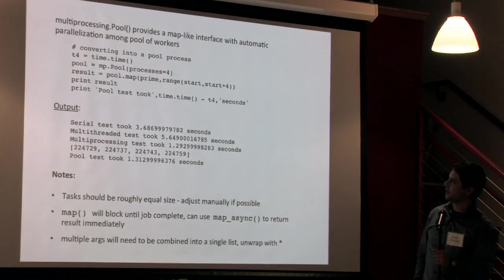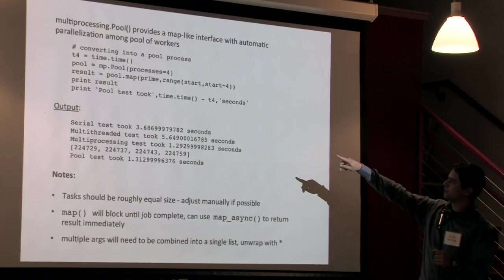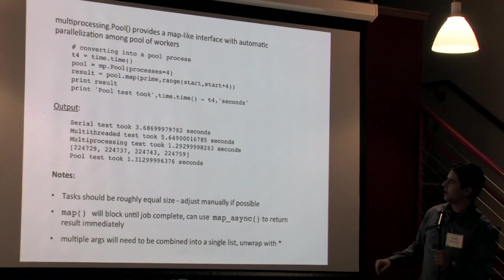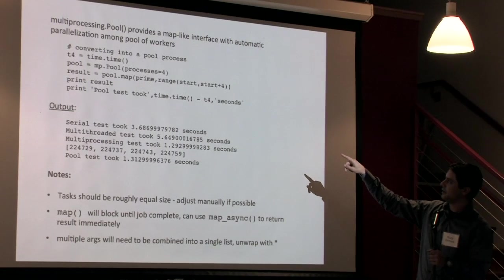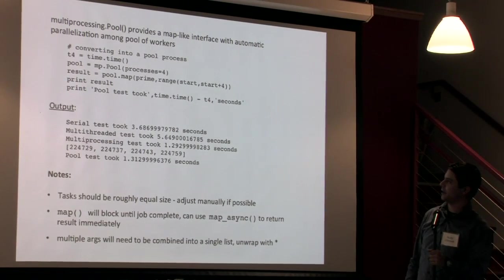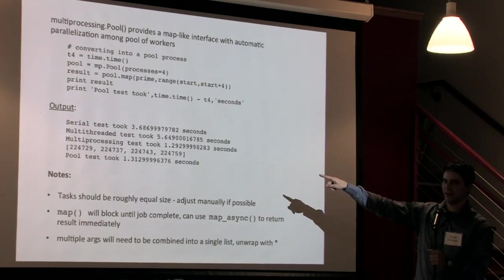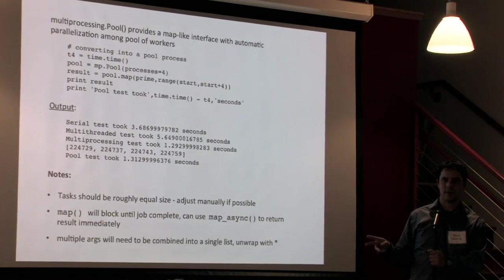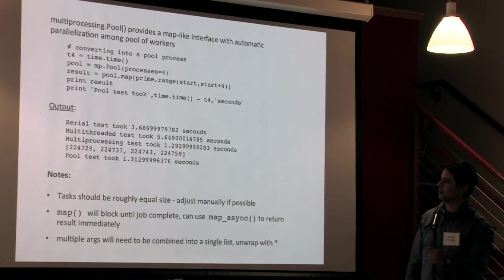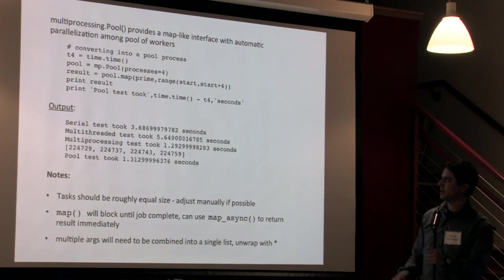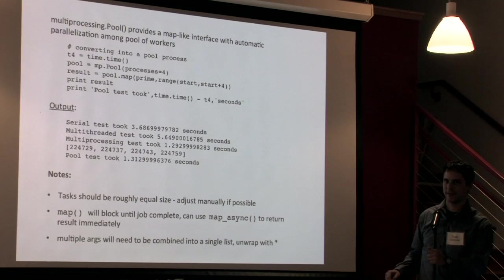So I specify the number of processes in this case four again and then I call up one of pool's methods which is map and I hand it my prime function and then I hand it four arguments that are going to go into that. It will run those and give me the result back as part of an array. And so what that looks like here is I just get an array back with all the results in it. No need to use the queue object like I was doing earlier. And you can see that it takes about the same time as the multi-processing test overall. So it does pretty well and it's a little bit easier to use. It's very concise here. I only need really two lines of code to put this into effect.